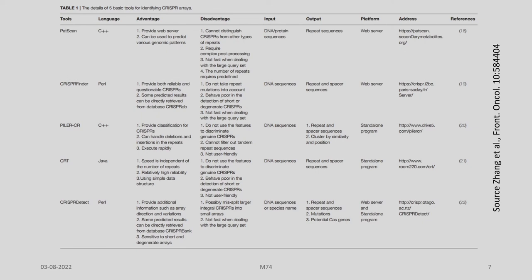You can see here the details of the five basic tools for identifying CRISPR arrays: PET scan, CRISPR-Finder, Piler-CR, CRT, and CRISPR-detect. The advantages and disadvantages of each are listed. Interestingly, the input accepted by these tools also varies — PET scan takes both DNA and protein sequences, while CRISPR-Finder, Piler, and CRT only accept DNA sequences as input, and the output also varies.